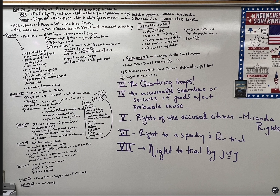We know that Article 1 creates the legislative branch, which is Congress. It's a bicameral legislature. Congress is the House of Representatives and the Senate. In the House, you must be 25 years old, a seven-year citizen, live in the state you represent. There are 435 of them in the House. It's based on population — the larger states get more votes, the littler states don't get as many votes. And they serve for two-year terms.